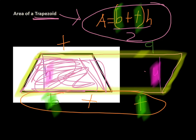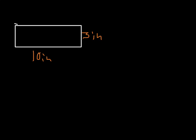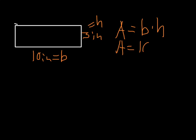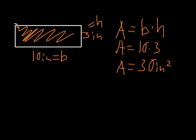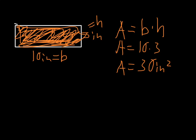Let's practice. First, a rectangle: 10 inches wide and 3 inches tall. Area = base × height, so area = 10 × 3 = 30 inches squared.